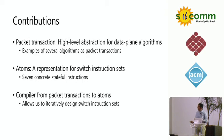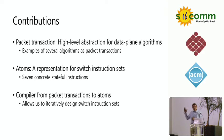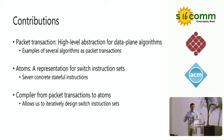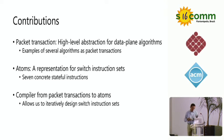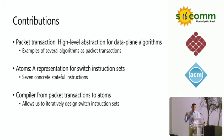Concretely, we have three contributions. One is an abstraction called packet transactions — a high-level programming model for data plane algorithms — and we show how several algorithms fit neatly into this abstraction. Two, at the other end of the stack, we have a low-level abstraction called an atom, which is a consistent representation for switch instruction sets for line-rate switches, and we show seven concrete stateful instructions using these atoms. Finally, we have a compiler that bridges the gap between these high and low-level abstractions, which we also use to iteratively design switch instruction sets.